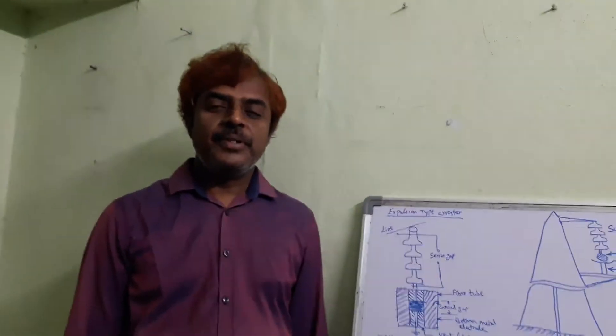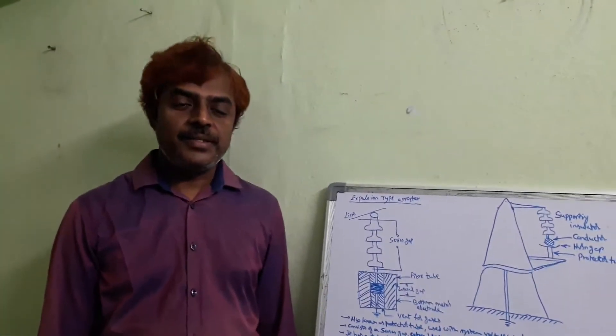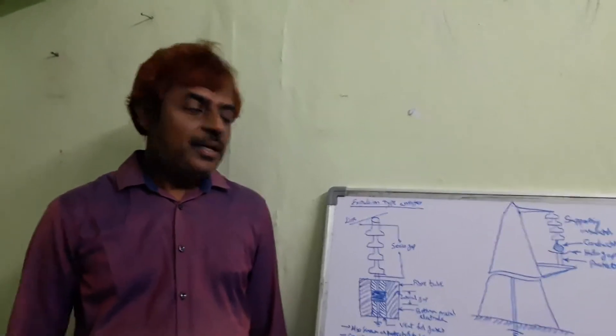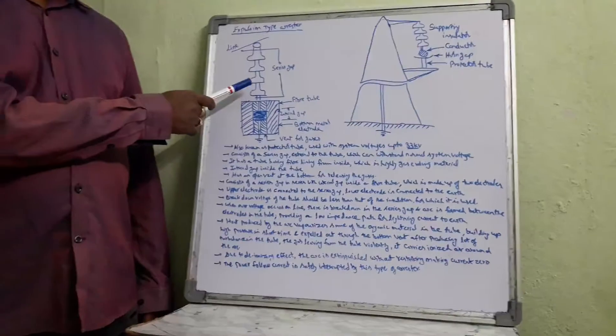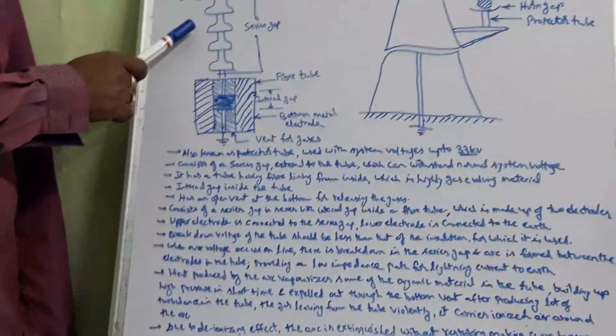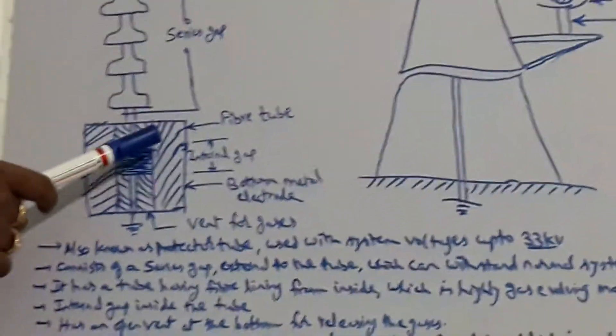Now we are going to discuss the expulsion type arrestor, which is also known as a protector tube. In this protector tube, as shown in the figure, it consists of the series cap and fiber tube.